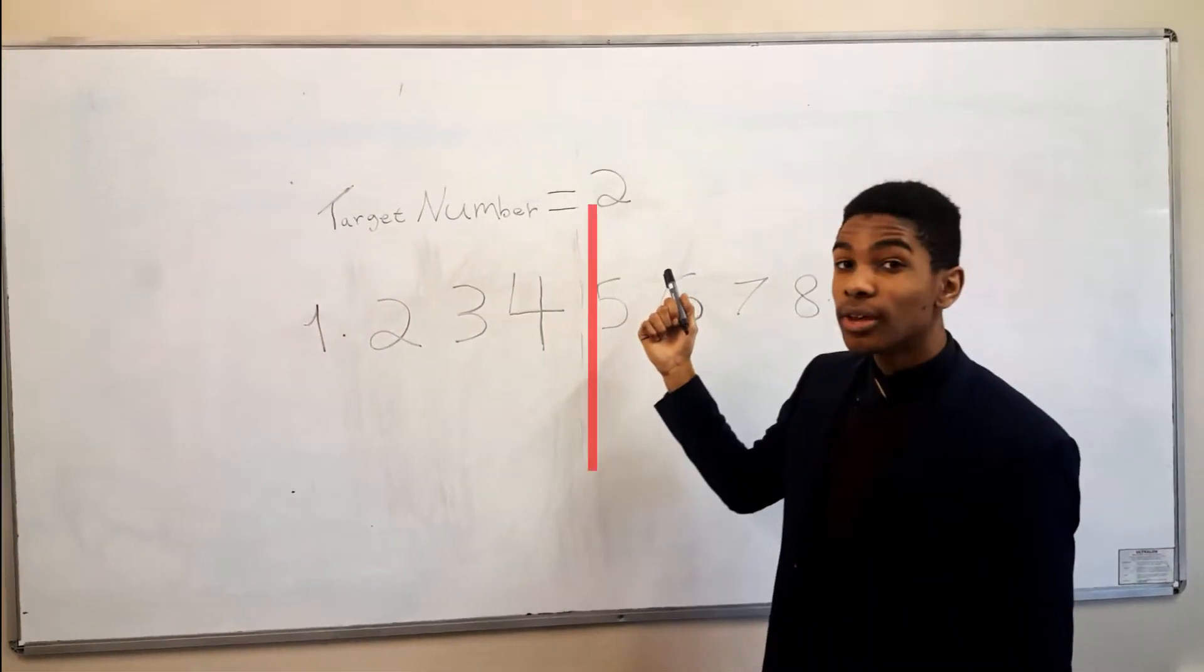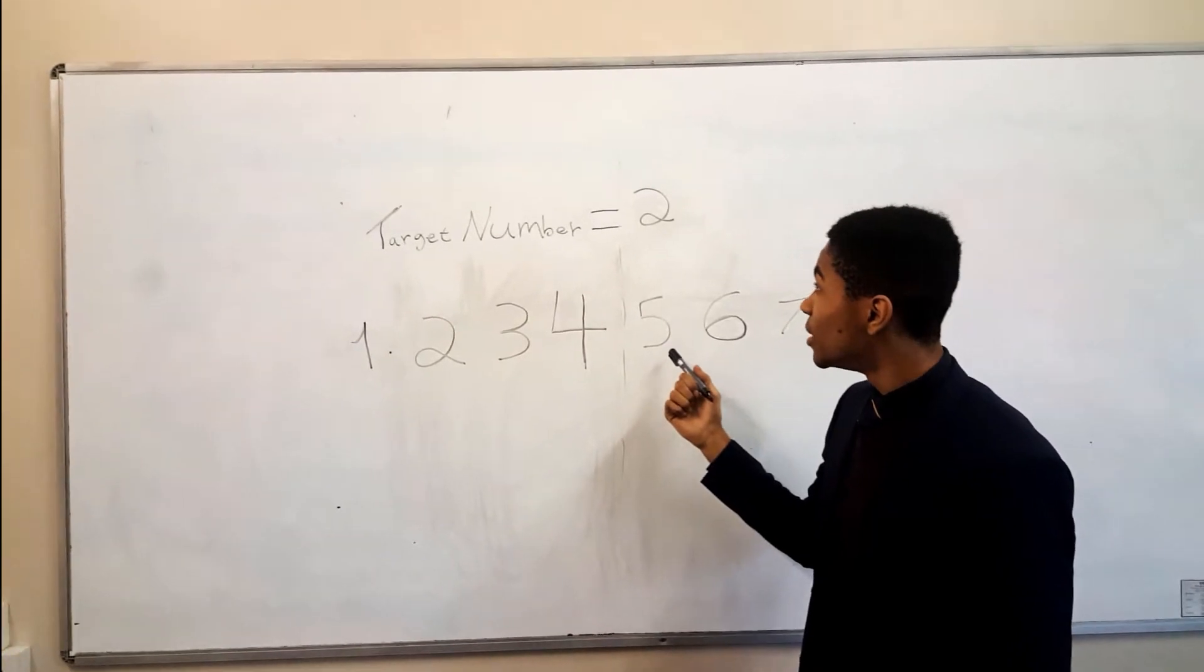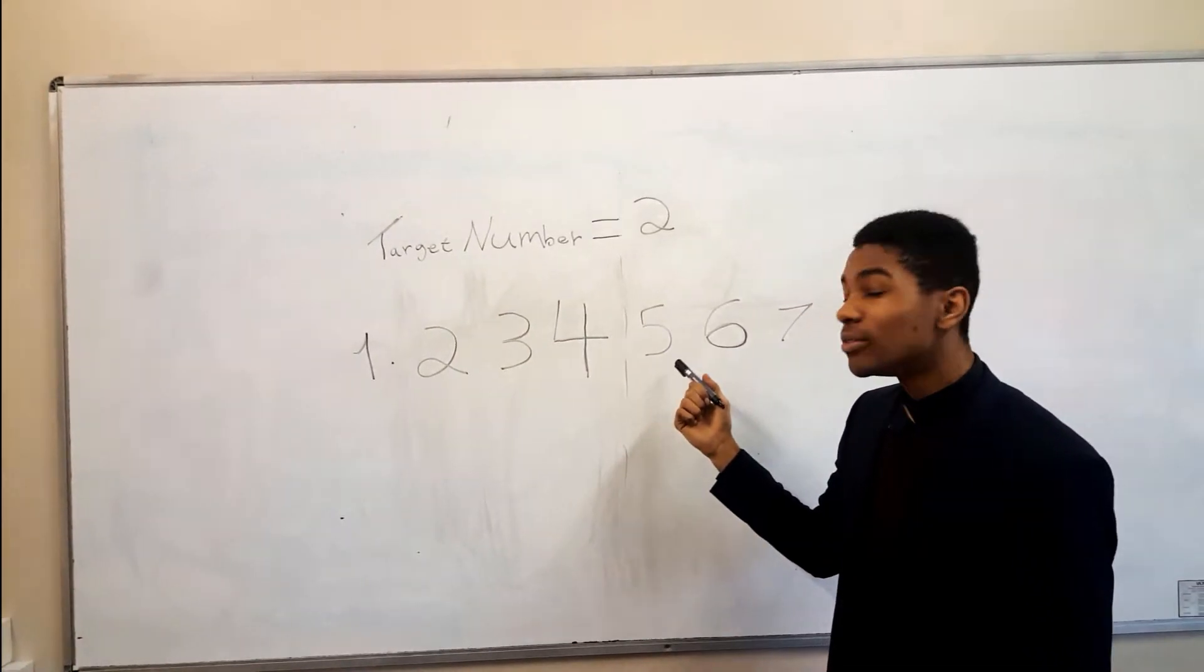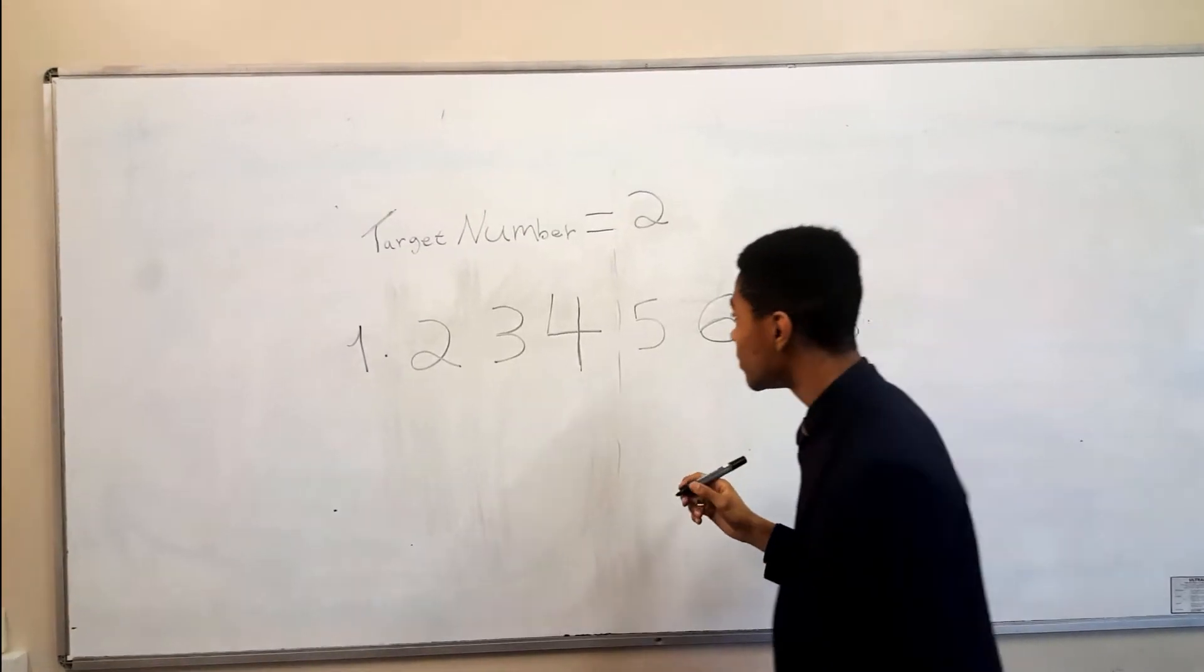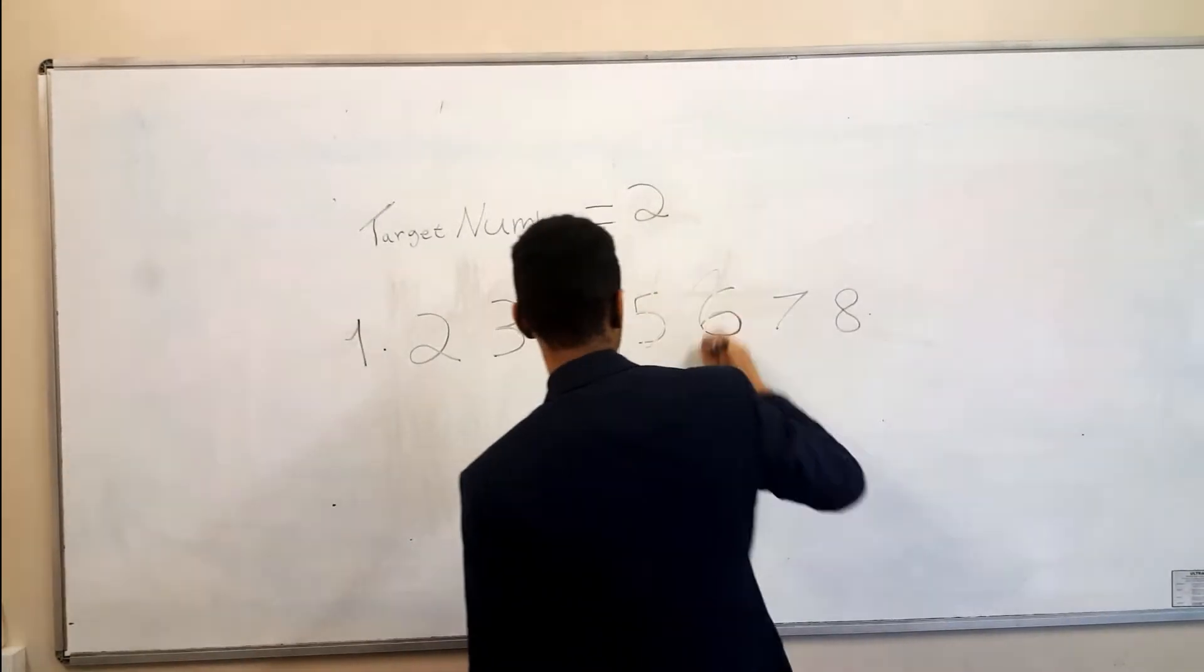We check if our target number 2 is equal to the value on the right. 2 is unfortunately not equal to 5, so we then check if 2 is bigger than or smaller than 5. 2 is smaller than 5, so we move to the left and discard the right.